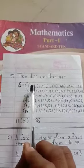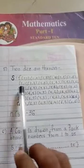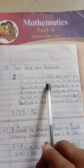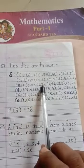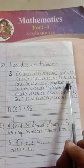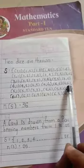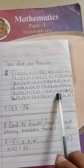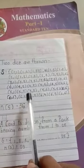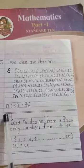Two dice are thrown. S is equal to (1,1), (1,2), (1,3), (1,4), (1,5), (1,6), (2,1), (2,2), (2,3), (2,4), (2,5), (2,6), (3,1), (3,2), (3,3), (3,4), (3,5), (3,6), (4,1), (4,2), (4,3), (4,4), (4,5), (4,6), (5,1), (5,2), (5,3), (5,4), (5,5), (5,6), (6,1), (6,2), (6,3), (6,4), (6,5), (6,6). N of S is equal to 36.